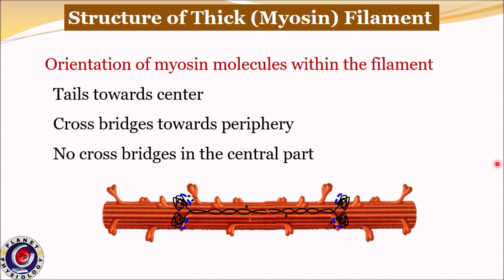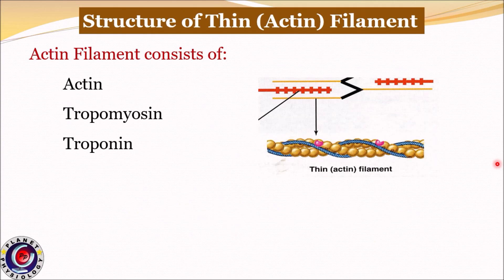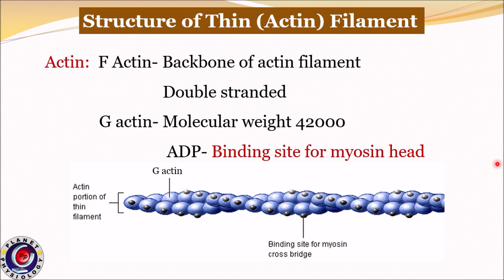Now coming to the actin filament. It is made up of three separate proteins: actin, tropomyosin, and troponin. F-actin is a double-stranded protein and forms the backbone of the actin filament. It is made up of globular G-actin molecules with a molecular weight of 42,000. Each G-actin molecule possesses ADP, which acts as the active site for interaction with the myosin cross bridge.